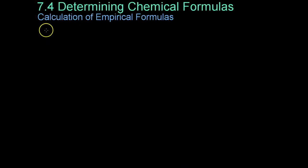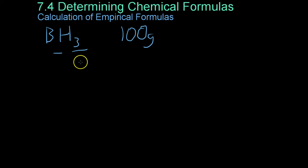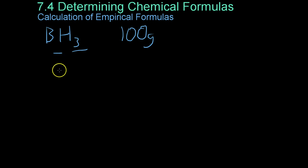So now we're going to do a calculation of an empirical formula, and for this we're going to use the example of diborane. So basically what we're going to do is experimentally find the ratio of hydrogen to boron within this compound. So what you do is you start off with a hypothetical 100-gram sample of diborane, and then you take the percent composition of each atom's mass. So for example, boron composes 78.1% of the mass of diborane,